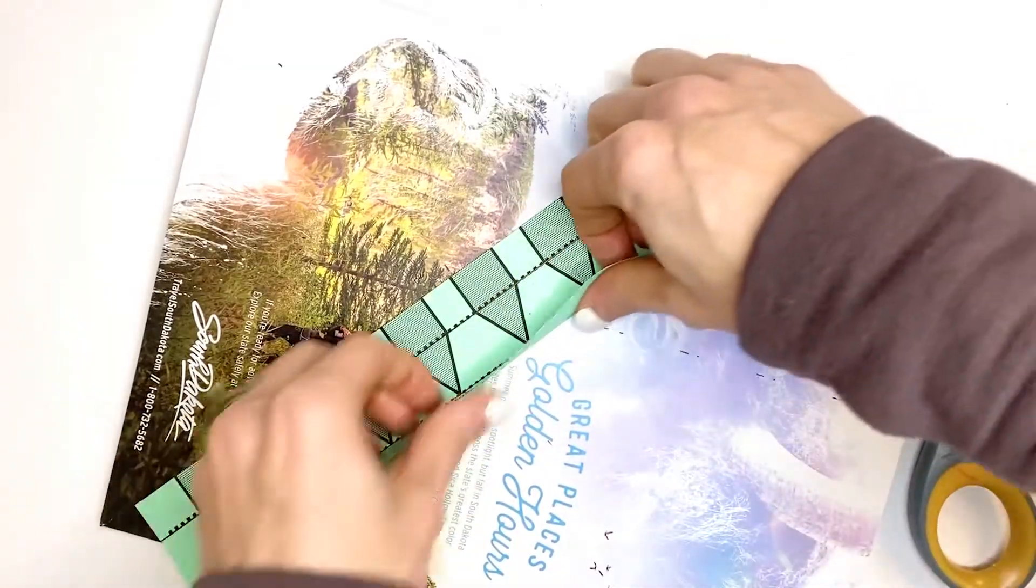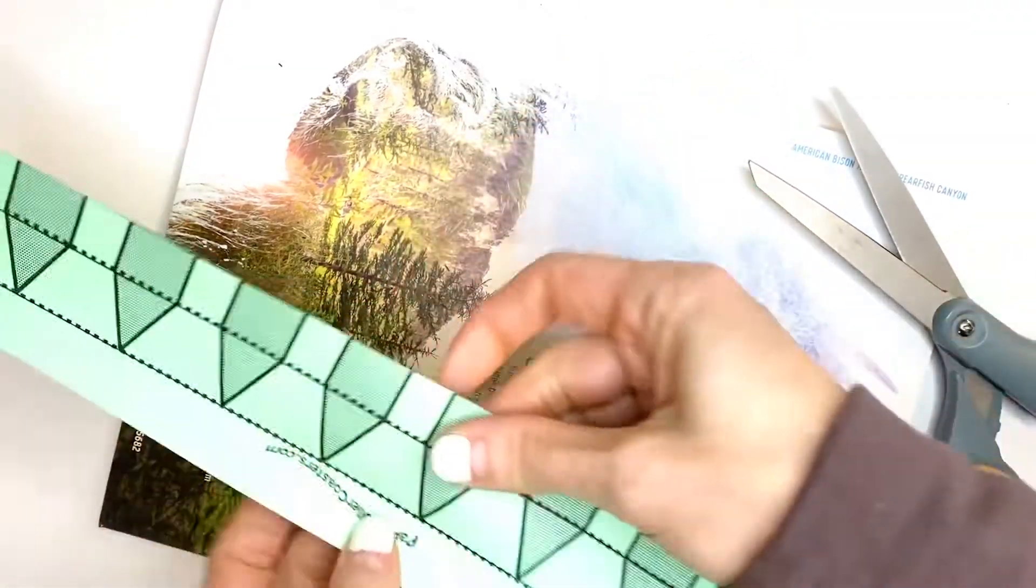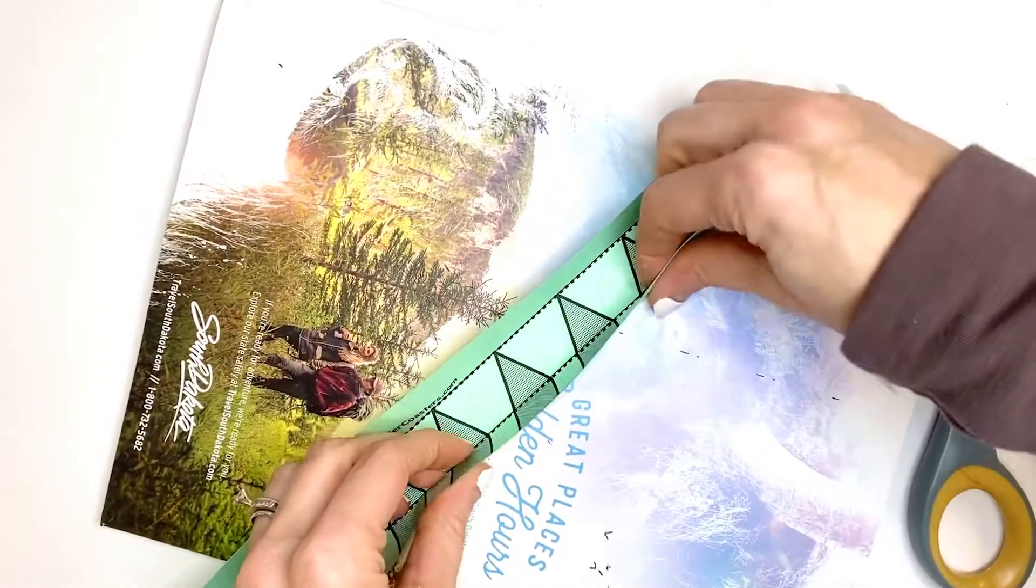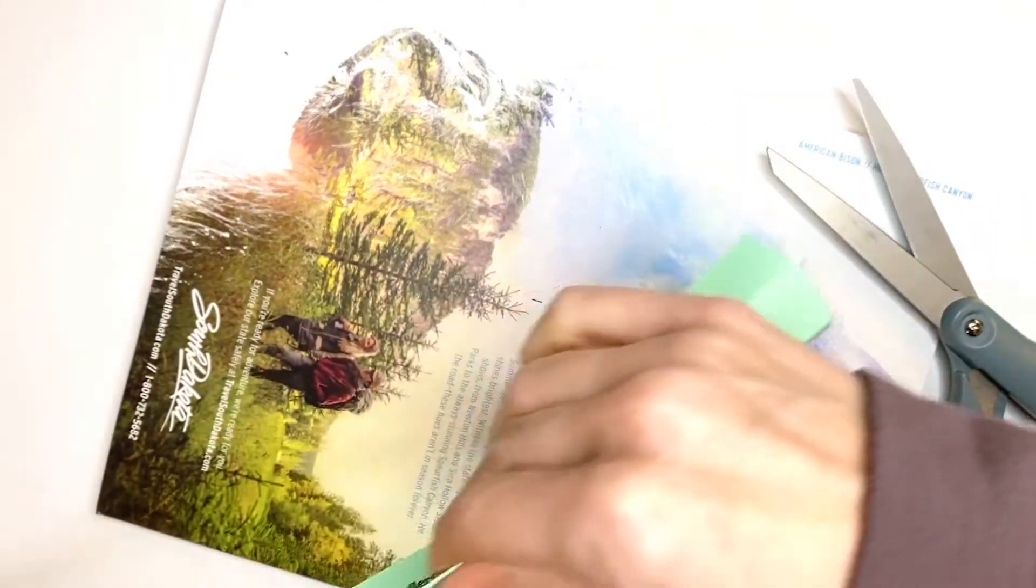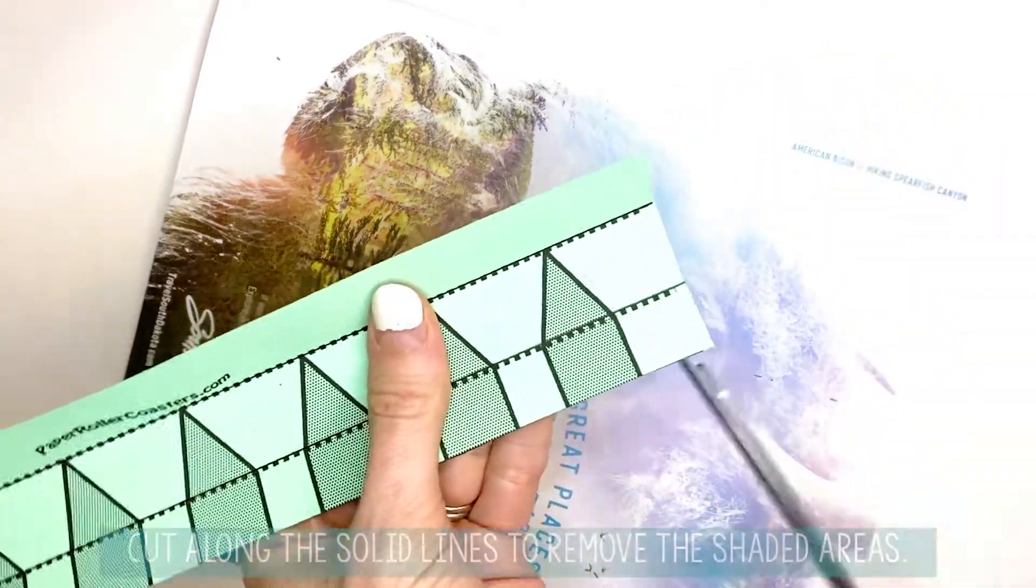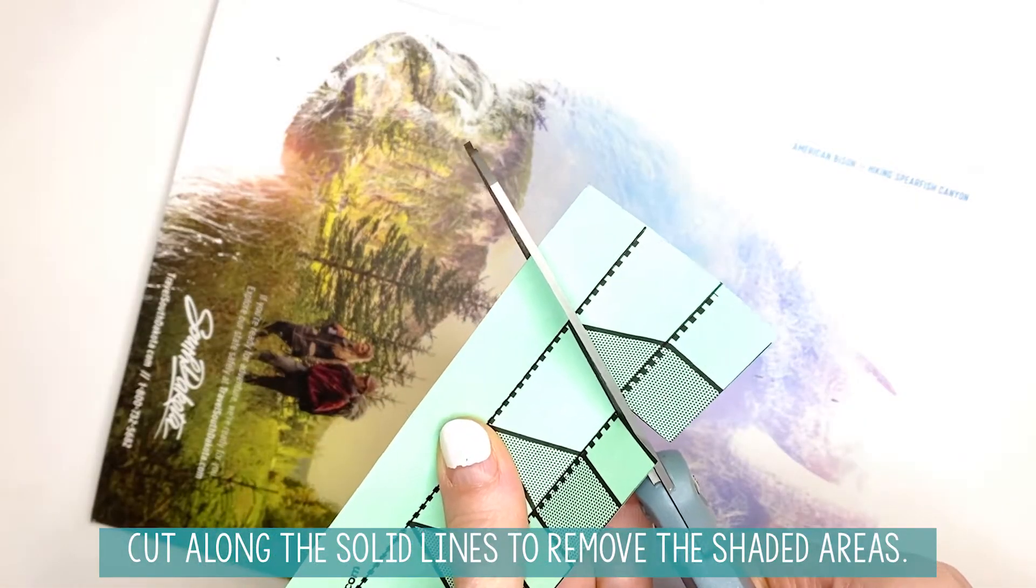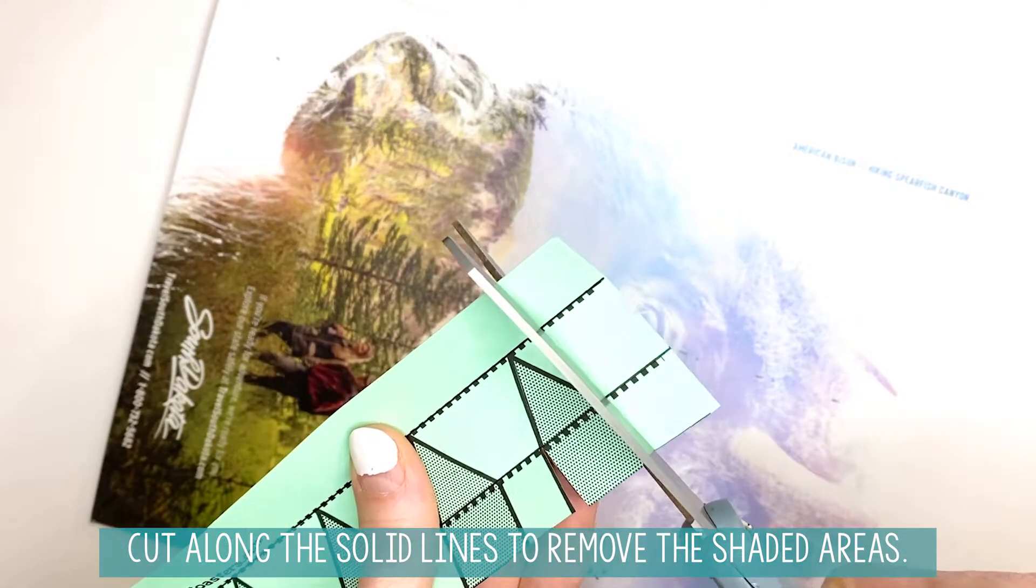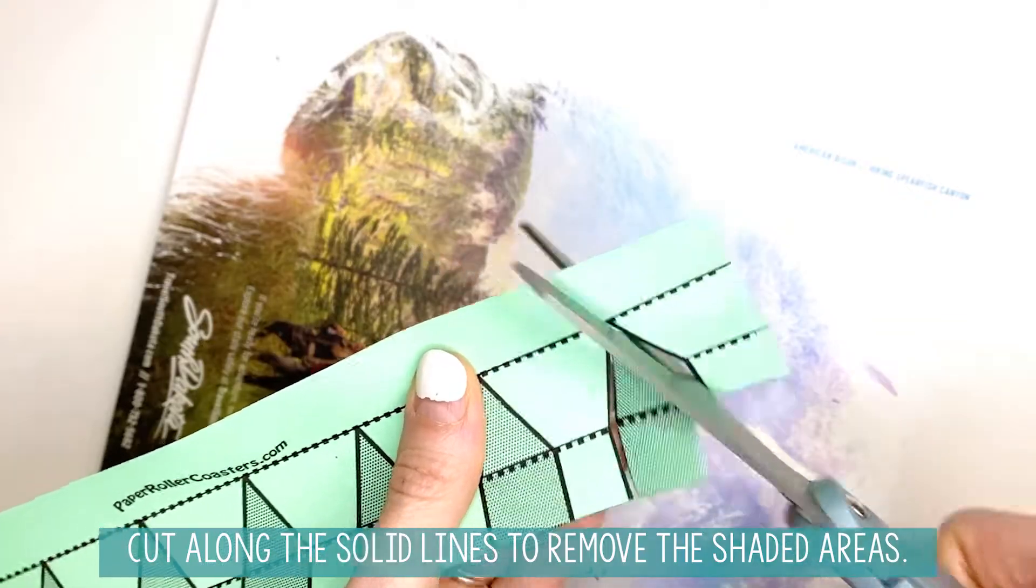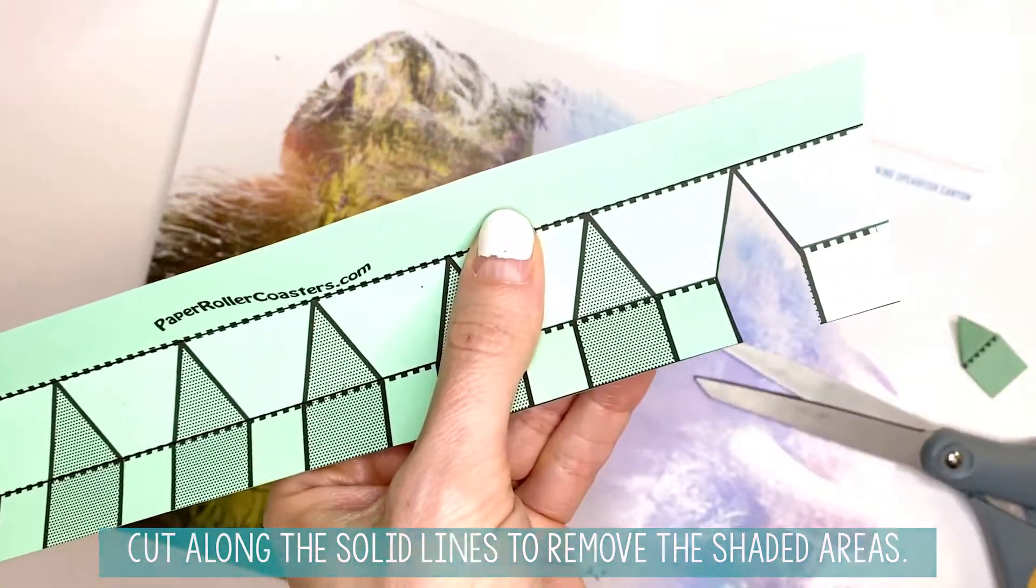Then you are going to fold these along those lines. Next, we are going to cut along the solid lines that are shaded. Those need to be all cut out, so I'm going to go through and cut all of those out.